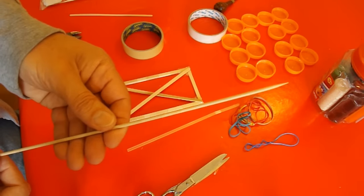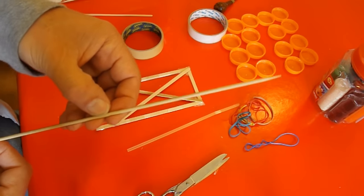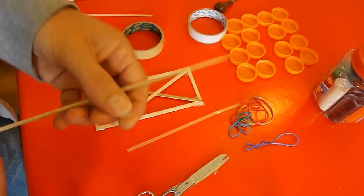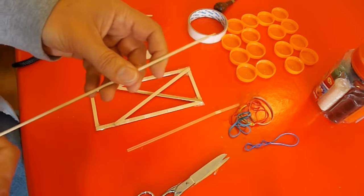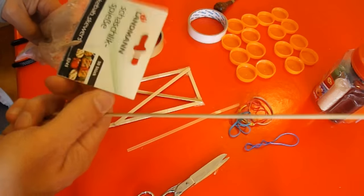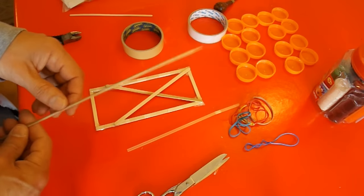If you can't get hold of barbecue skewers, bamboo canes or wooden dowel. But these are, I mean, that pack of fifty is usually a pound or something like that, so they're pretty cheap.